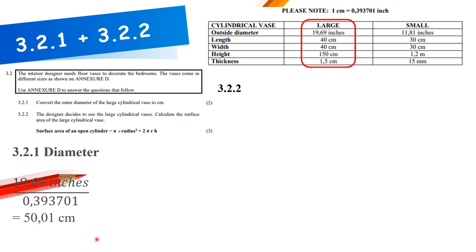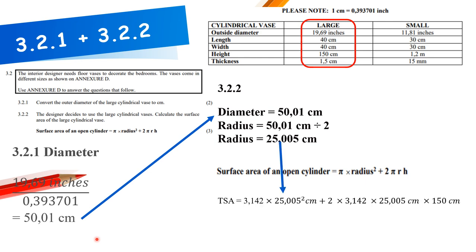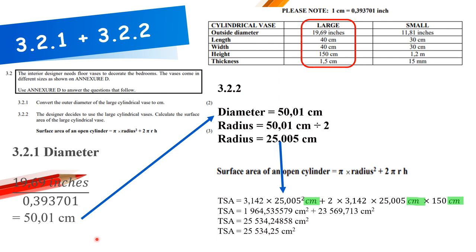Calculate the surface area of the large cylindrical vase. Diameter = 50.01 cm, so radius = 50.01 ÷ 2 = 25.05 cm. Substitute into the cylinder surface area formula, ensuring all measurements are in centimeters. The answer is 25,534.24858 cm², rounded to two decimal places: 25,534.25 cm².